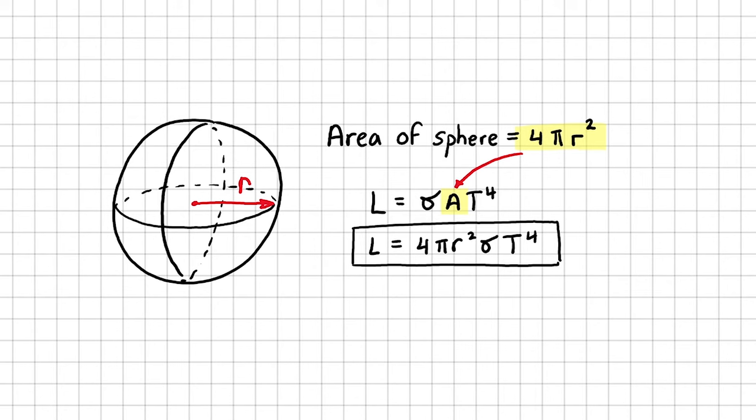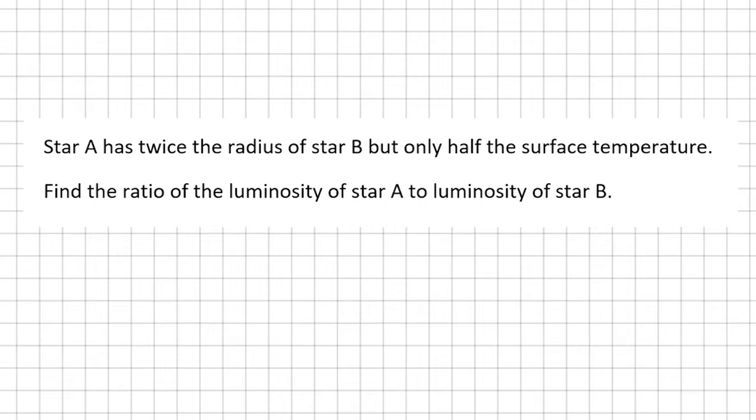So this equation shows us that as radius increases, luminosity also increases. And we can say the same for temperature. But since temperature is raised to a power of 4, it has a much larger effect on luminosity than the radius. Why don't we use this equation and try a question like this?